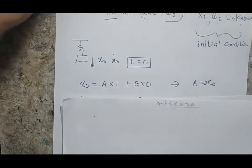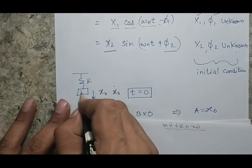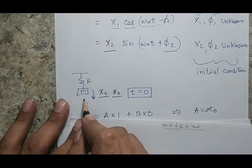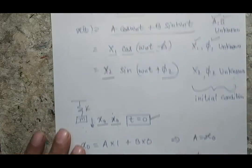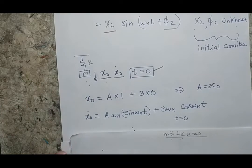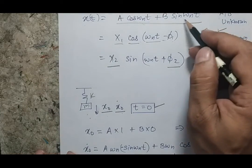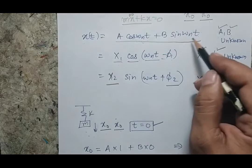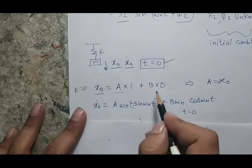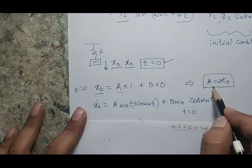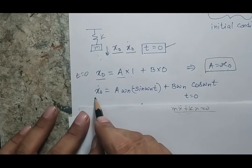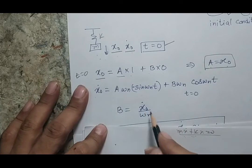Assuming x₀ and ẋ₀ are both given at time t = 0, I use the first expression x = A cos(ωₙt) + B sin(ωₙt). At t = 0: cos(ωₙ·0) = 1 and sin(ωₙ·0) = 0, so A·1 + B·0 = x₀, giving A = x₀. Differentiating the expression and putting t = 0 gives B = ẋ₀/ωₙ.